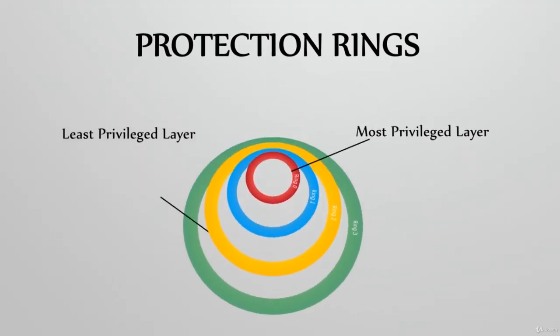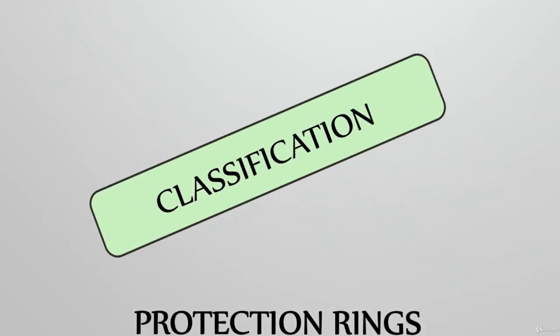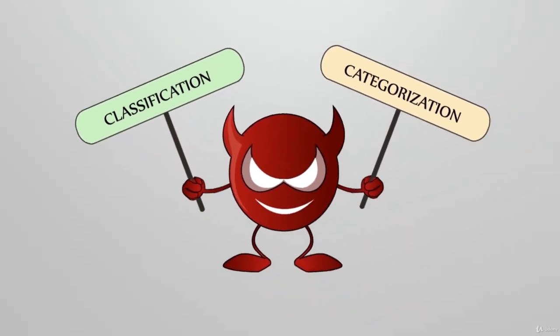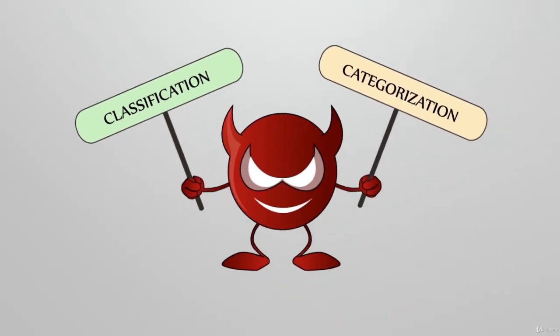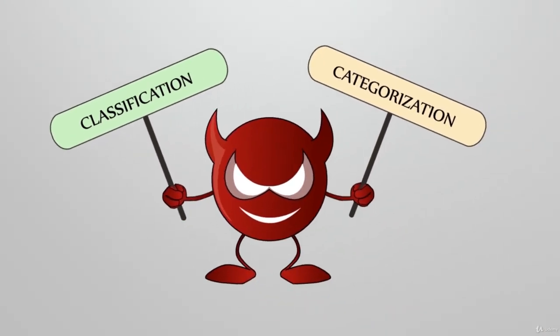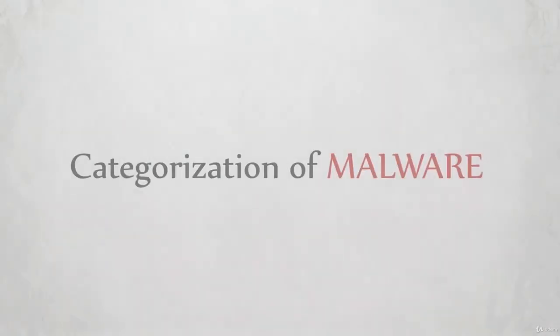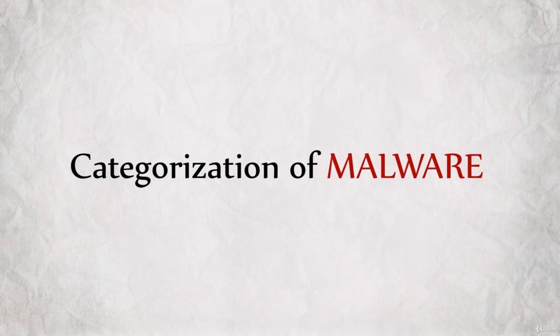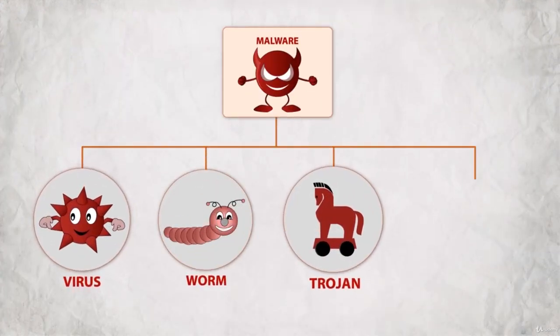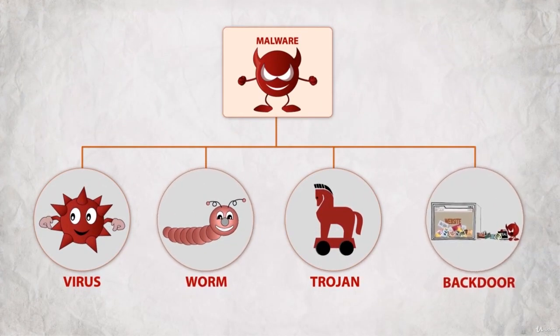Having learnt about how malware is classified, let us move into categorising malware. Malware can be categorised into four groups, namely virus, worm, trojan, and backdoor.